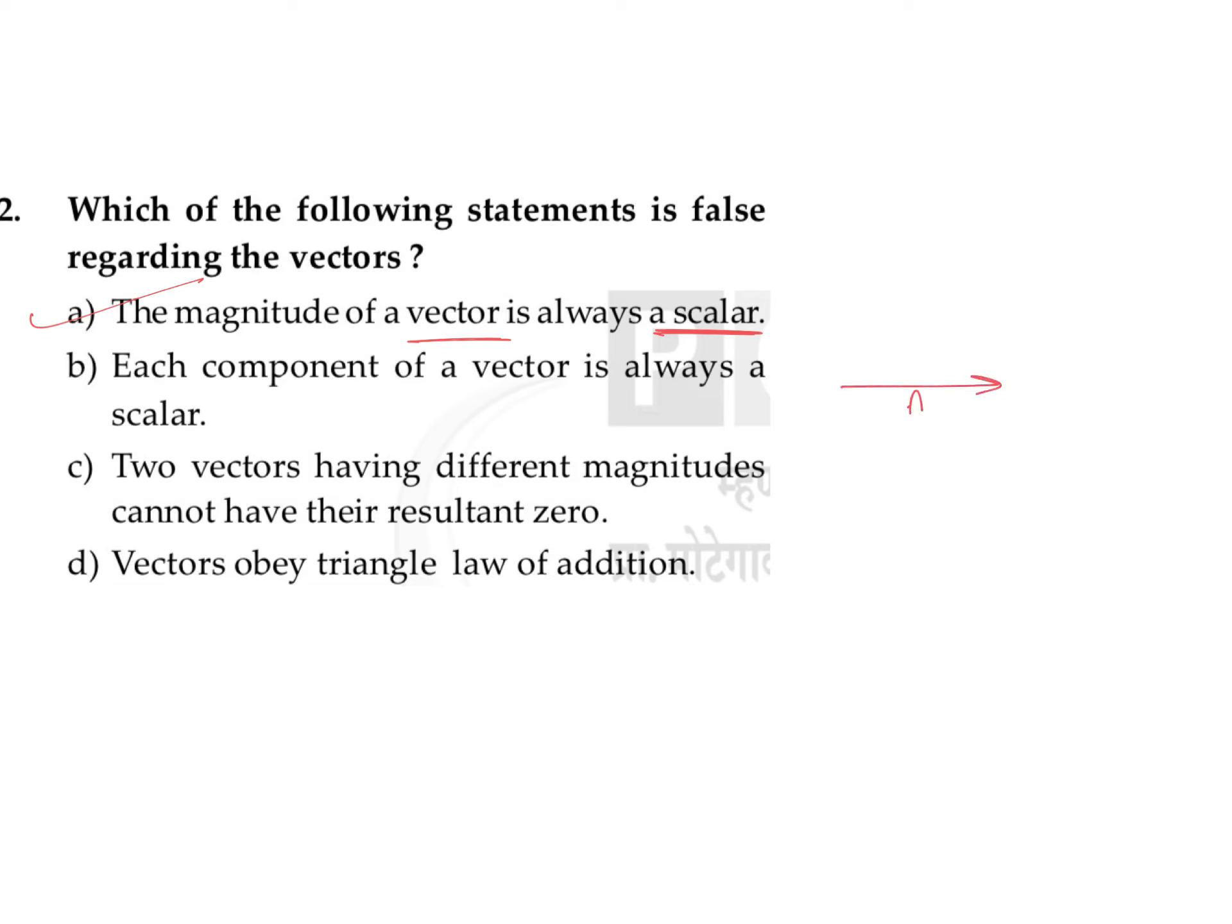Like if you are considering that a vector plus b vector, if you are adding these two vectors, you are getting a resultant vector, call it r vector. So a vector and b vector are the components or the parts of r vector. Over here, a vector and b vector are the components and they are vectors. They are not always a scalar. So the second option is wrong.